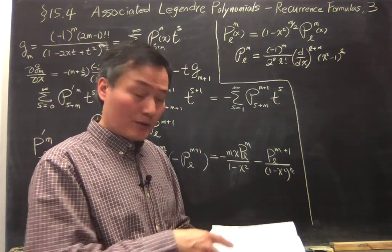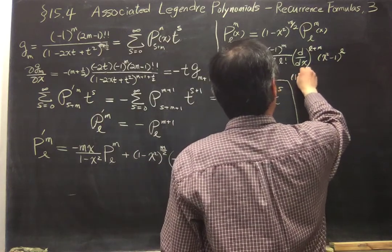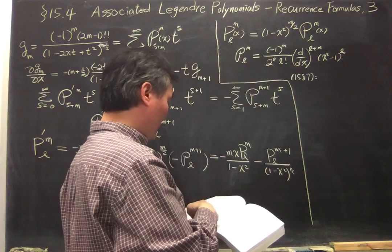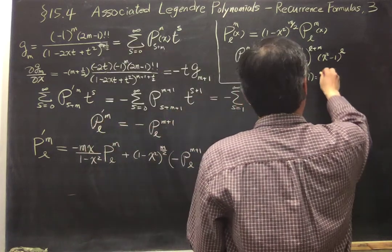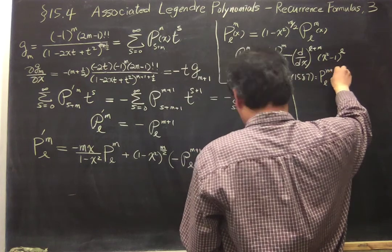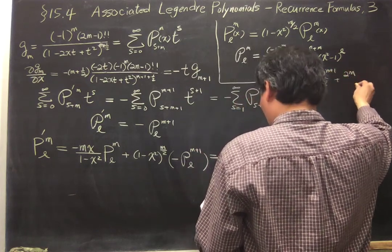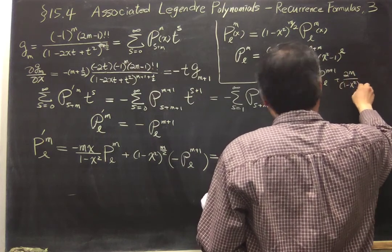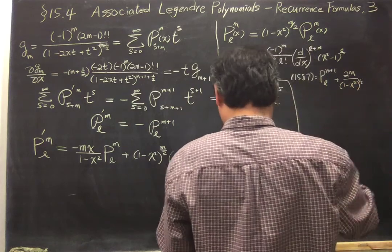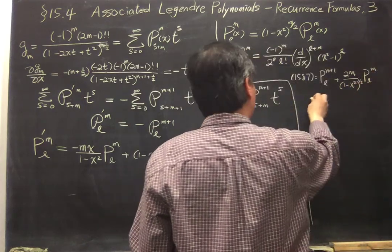What we will use is equation 15.87. So 15.87 will give you PL m plus 1 plus 2m over 1 minus x squared to the one-half PL m plus